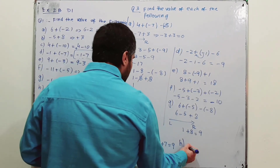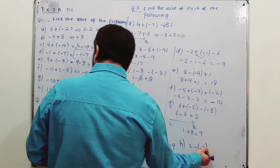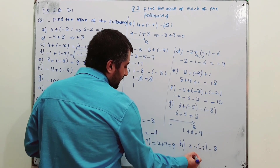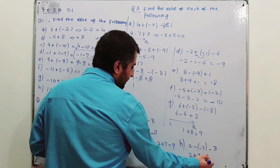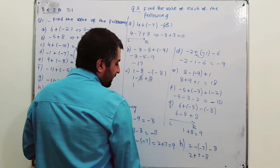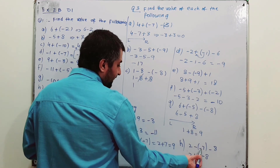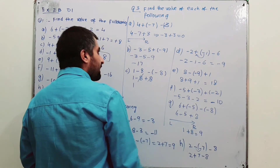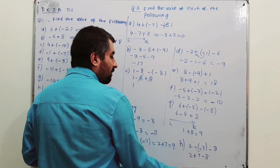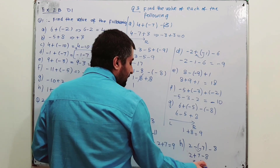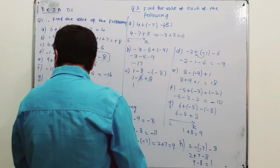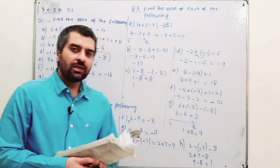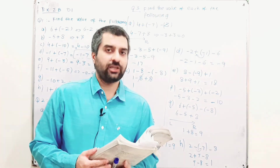Part H: 2 minus (minus 7) minus 8. Open the bracket — minus times minus becomes plus 7 — giving 2 plus 7 minus 8. Moving left to right, addition comes first: 2 plus 7 is 9, then 9 minus 8 gives 1. That is the solution for Exercise 2b of D1 7th edition. Subscribe the channel if you haven't done it yet, thank you.